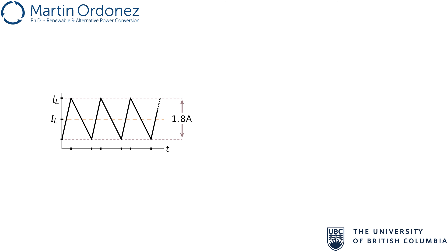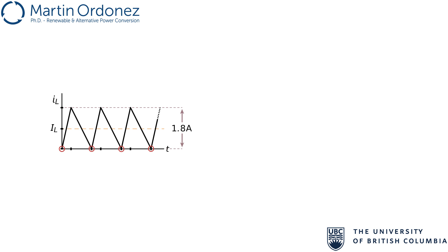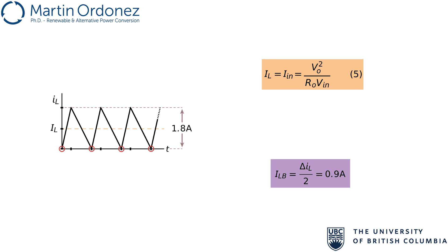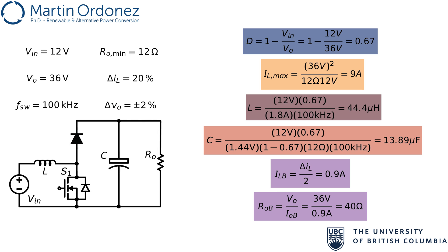So far, the analysis has been performed assuming that the converter operates in continuous conduction mode. An important parameter to find is the load resistance that will cause the converter to operate in the boundary between continuous and discontinuous conduction mode. When the average inductor current decreases because the load resistance increases, the inductor current during the lowest part of the ripple will approach 0. When the average current is too low, the inductor current will touch 0. This is the boundary of discontinuous conduction mode. If the load resistance were to increase further, the relationships derived before will not be valid. The boundary of discontinuous conduction mode happens when the average inductor current is equal to half of the ripple, 0.9 amps in this case. Using this relationship, the load at the boundary of discontinuous conduction mode is found to be 40 ohms. With this, all the main parameters and waveforms of the asynchronous boost converter for this example have been found and selected.